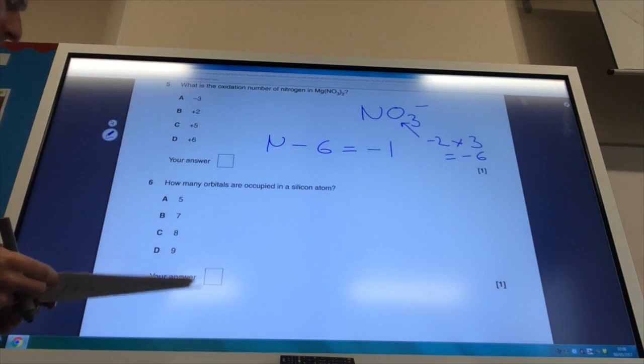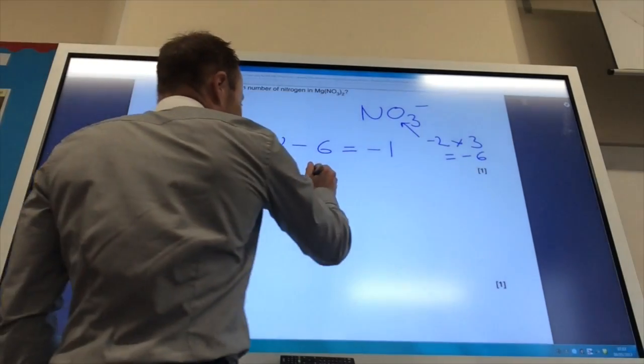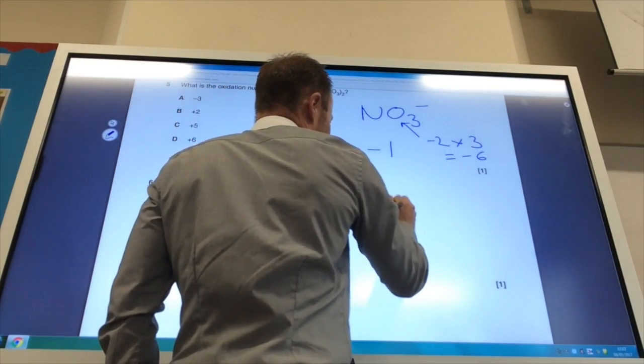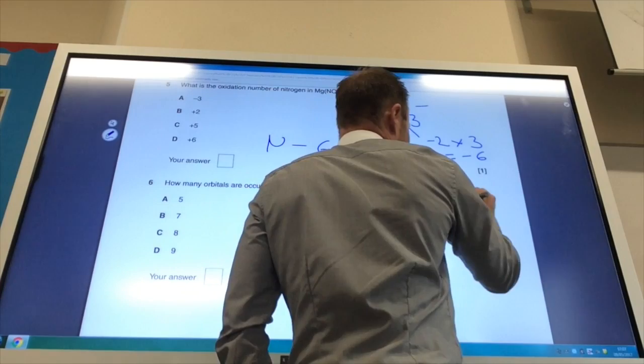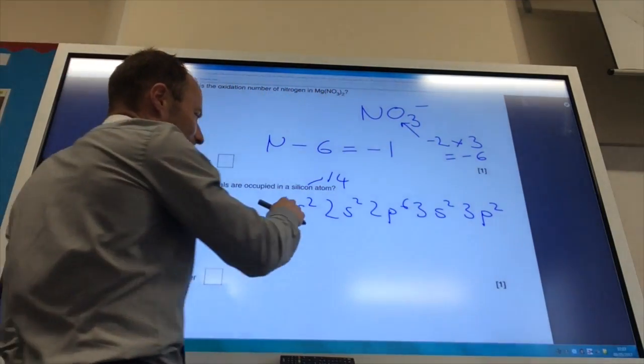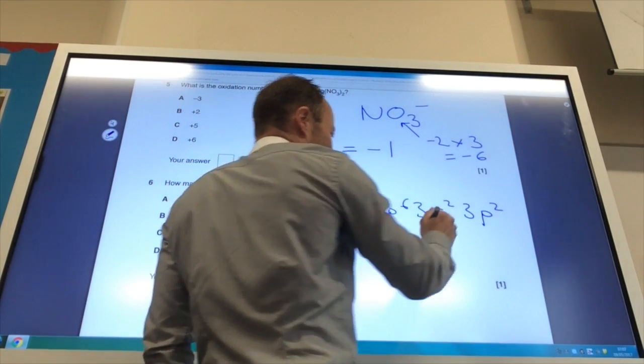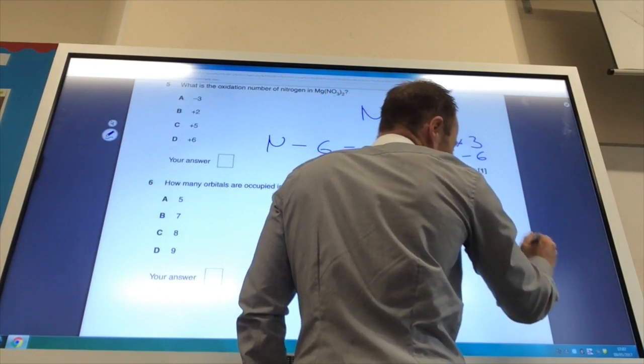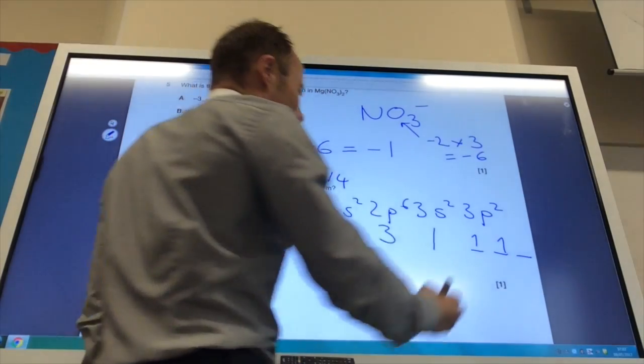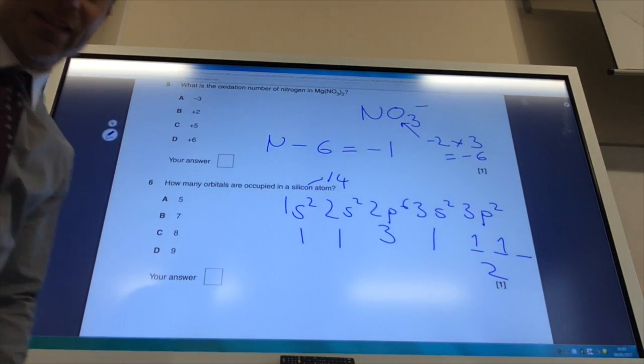How many orbitals are occupied in a silicon atom? The atomic number of silicon is 14, so it's 1s2, 2s2, 2p6, 3s2, 3p2 for the electronic configuration. You're going to have 1 orbital there, another 1 here, you've got 3 there, you've got 1 there, but remember for these p orbitals the electrons will spread themselves out. That is actually 2 orbitals there, so 5, 6, 7, 8. The answer is C.